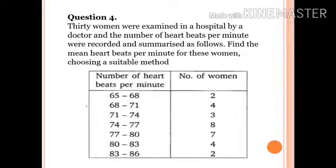Question number 4: 30 women were examined in a hospital by a doctor and the number of heartbeats per minute were recorded and summarized as follows. Find the mean heartbeats per minute for these women. Number of heartbeats per minute: 65 to 68, 2 women; 68 to 71, 4; 71 to 74, 3; 74 to 77, 8; 77 to 80, 7; 80 to 83, 4; 83 to 86, 2.